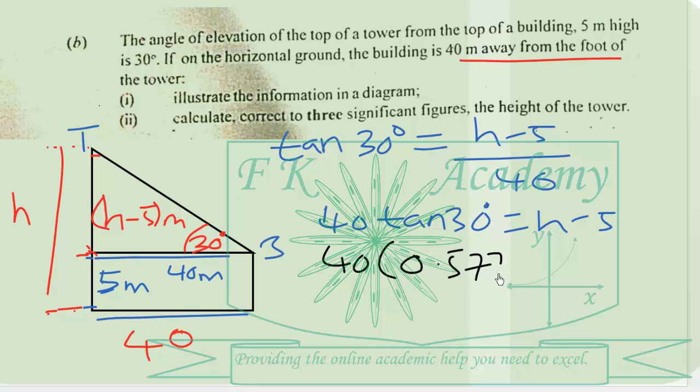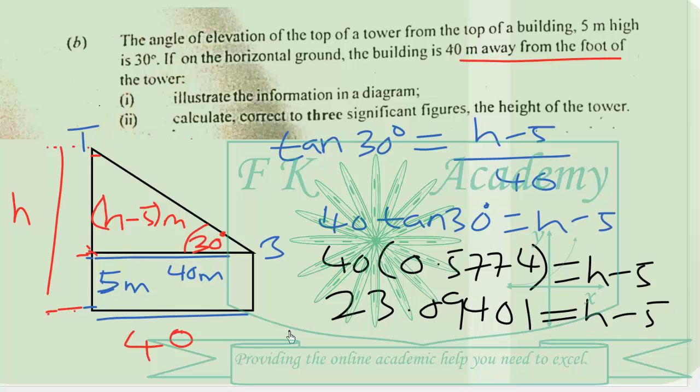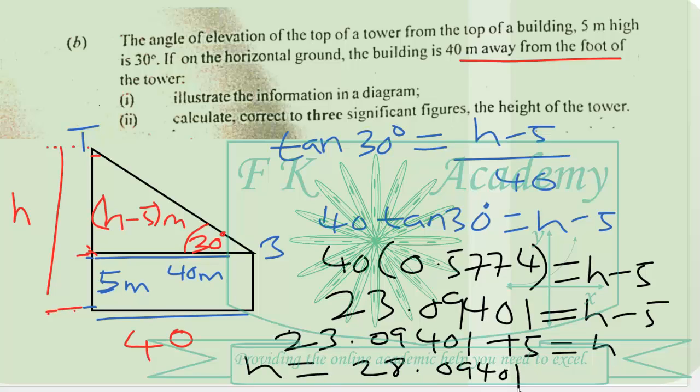Then we can find the decimal equivalent of tan 30 which is 0.5774. And when we multiply this we will obtain 23.09401. We now solve for H to get 23.09401 plus 5 which is 28.09401.